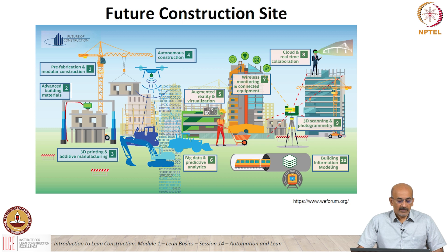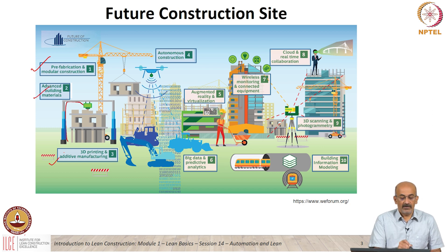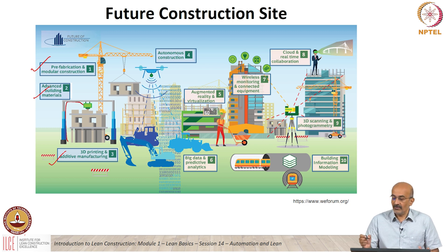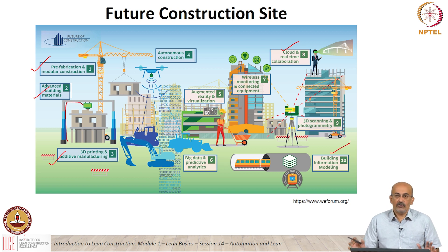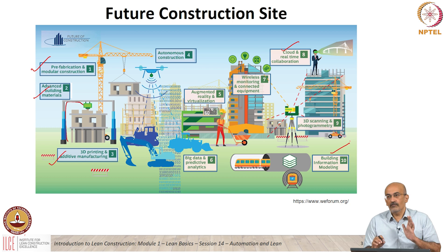When we go into construction automation, this is a slide developed by the World Economic Forum — what they call the future construction site. Some technologies such as prefabrication, building materials, or 3D printing are very physical oriented; they take care of the physical aspects of the project. Others like real-time collaboration, cloud, or BIM are more digital or IT aspects. So when we talk about automation there are 2 dimensions: information or digital technology, and the physical or robotic — where there is action, sensing, and physics behind it.